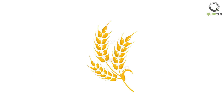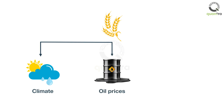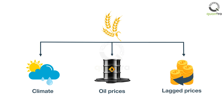Suppose you want to forecast the wheat futures prices. You look at various factors that affect the price of wheat, such as climate and oil prices. But the most important determinant is its lagged prices. For example, if the price of wheat increases for the last 12 months, you would expect the wheat price to increase this month.